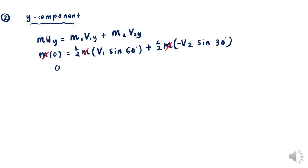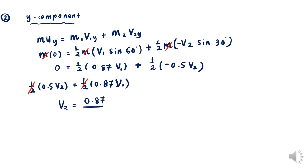Substitute all the information we have into the equation. We can cancel our M since M on the left-hand side is the same. We're left with one half times 0.5 V2 equals one half times 0.87 V1. Cancel half for both sides. V2 becomes 0.87 divided by 0.5 times V1. That is equation number 2.